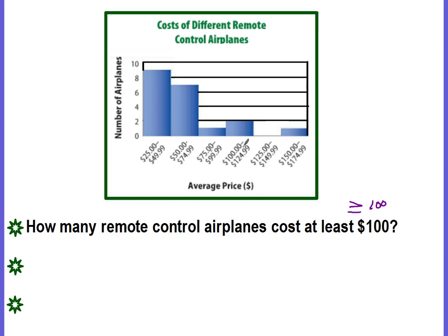So looking at my intervals, I see that my $100 starts with this interval right here. So it's going to include this interval, which is two planes, as well as the next interval, which is zero planes, and the last interval, which has one plane. So how many remote controls are there that are at least $100? Three.